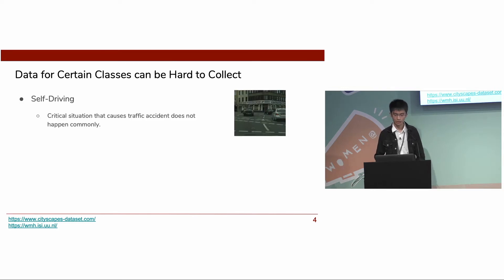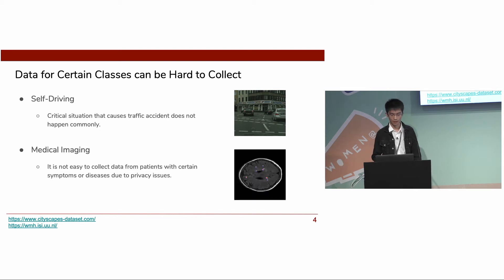For self-driving, in order to handle accidents, we want the driving model to have good performance on critical circumstances. However, critical situations that might cause traffic accidents do not happen commonly. For medical imaging, it's not easy to collect data from patients with certain symptoms or diseases due to privacy issues.